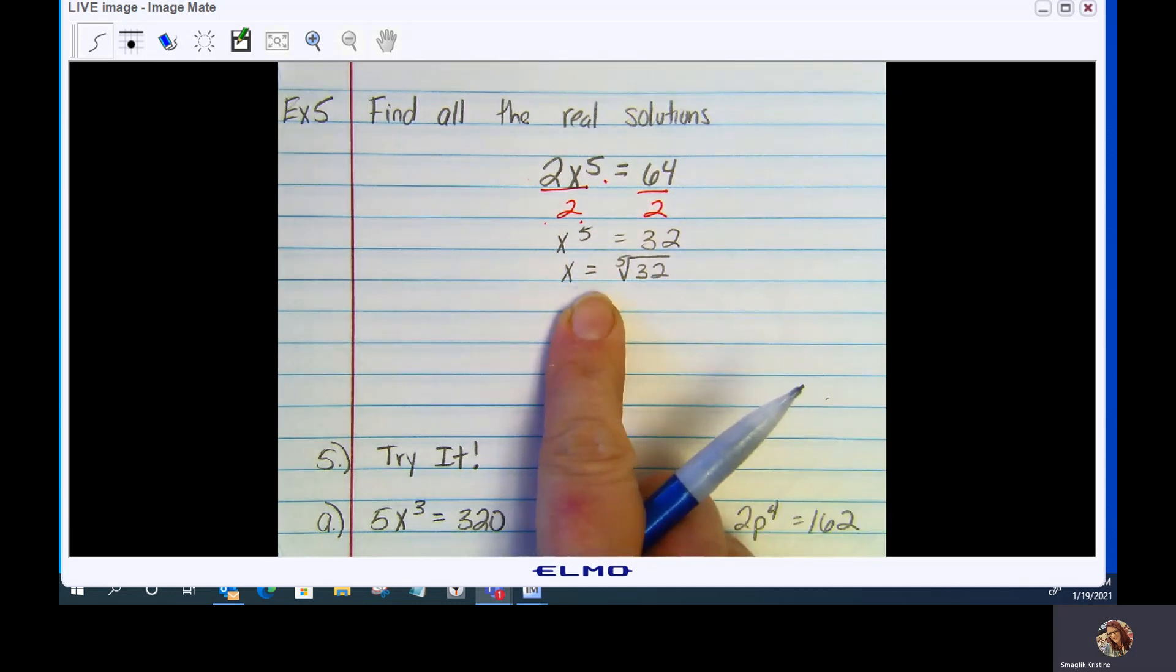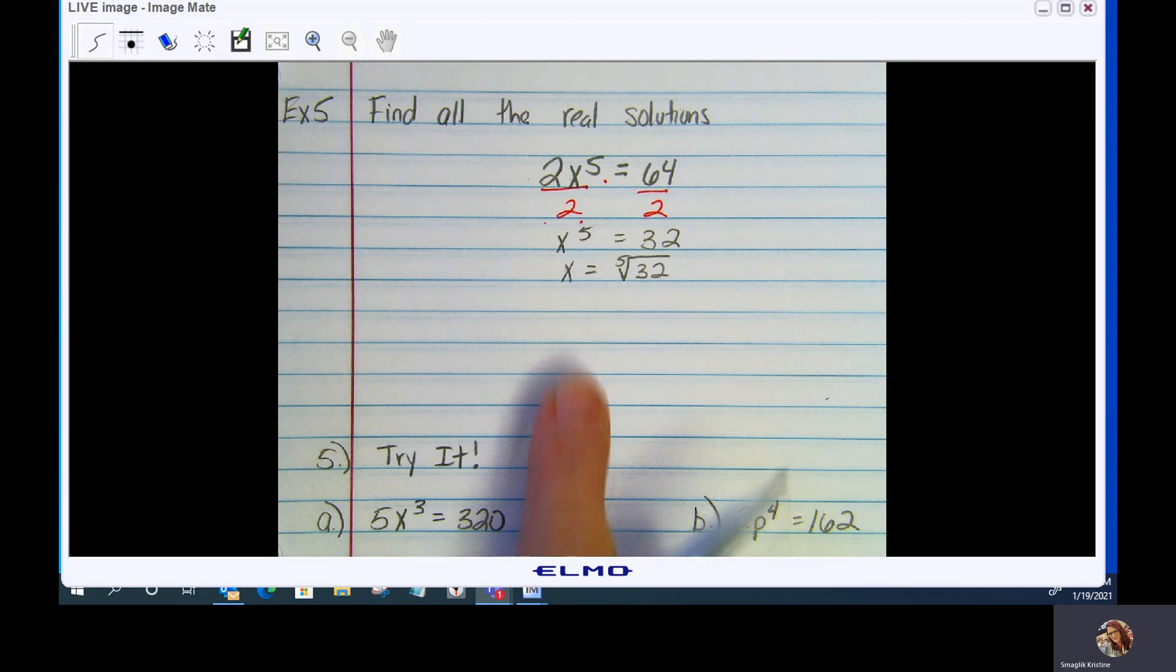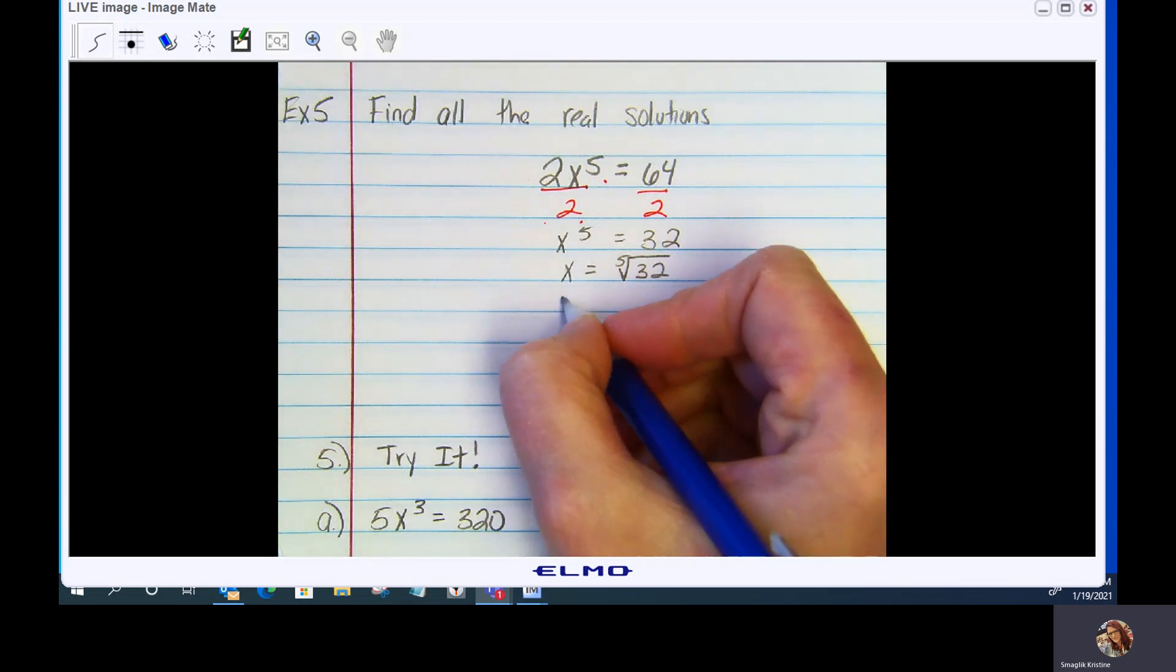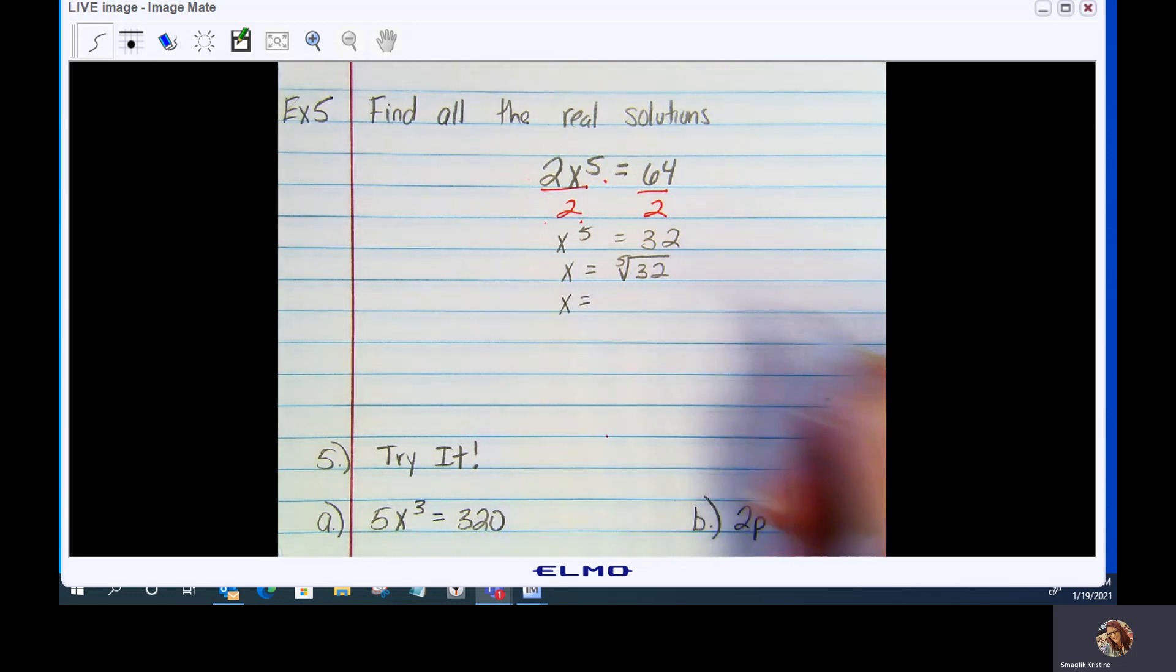There's no plus or minus necessary when you have an odd root. You will have to do it if you have an even root, you will need to do the plus minus. So x equals, well, the 5th root of 32 is 2. And that's it.